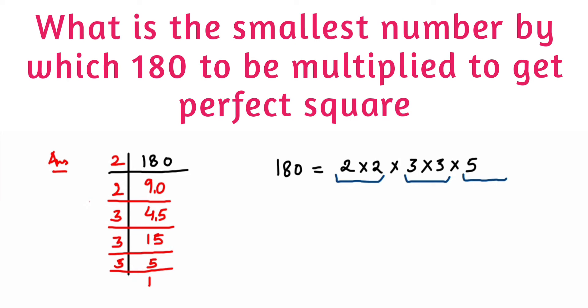If they're asking what is the smallest number to be multiplied, if I multiply with one more 5, it will have a pair. So the smallest number will be 5. I'm going to multiply 5 here with 180. Remember, you should multiply on both sides, otherwise it will not be balanced.